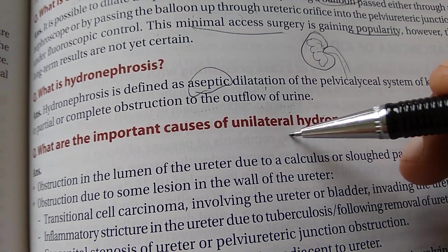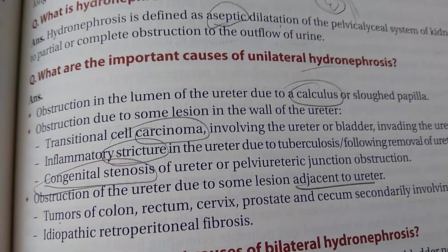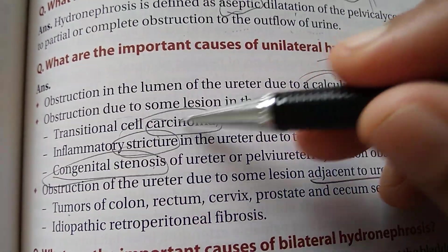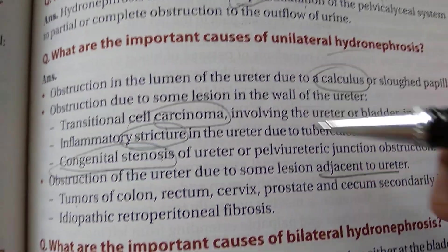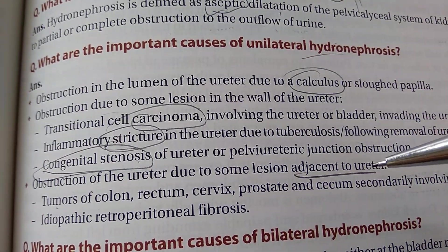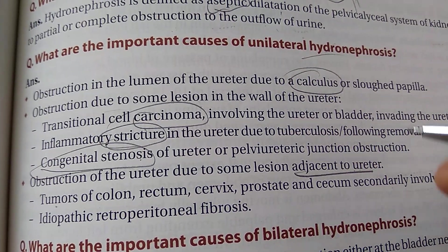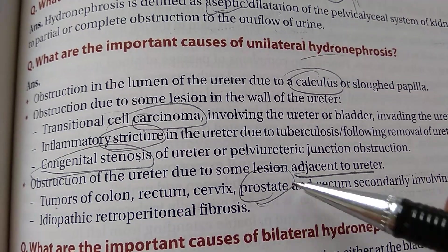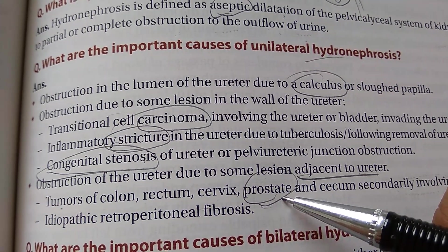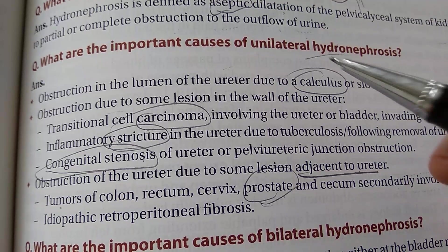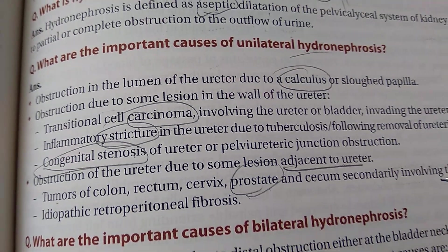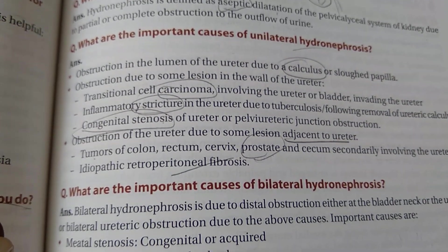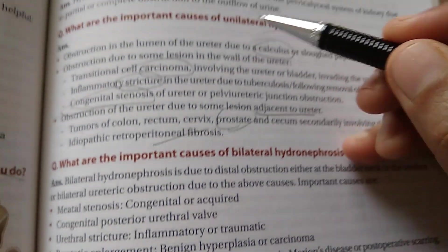If there is unilateral hydronephrosis, important causes include a renal stone, carcinoma, stricture, congenital stenosis, or any obstruction to urine outflow. It can also be caused by a lesion adjacent to the ureter — for example, the colon, cervix, or prostate. Prostatic enlargement can cause urinary retention with backflow causing hydronephrosis. Retroperitoneal fibrosis is another cause.